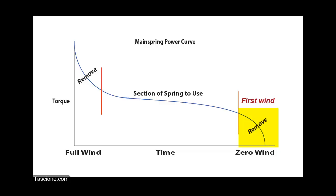So again, if we have a completely unwound clock or watch that needs six complete winding revolutions of the key or crown to achieve fully wound state, then this extreme section would represent the very first winding turn with this upper section representing the last winding turn.